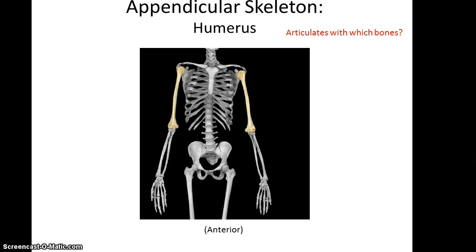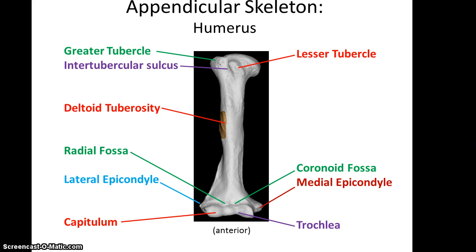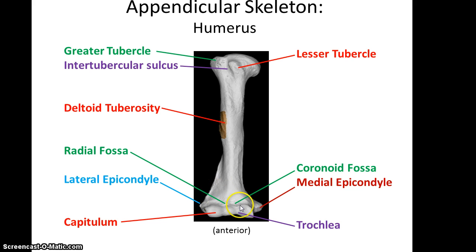Next is the humerus. Looking at the anterior view, at its proximal end you have a greater tubercle, an intertubercular sulcus or groove that wraps around the lesser tubercle. A little further down you find the deltoid tuberosity, which is a thick and rough patch on the shaft of the humerus. At the distal end you have the lateral epicondyle, slightly proximal to the capitulum, and then the medial epicondyle, slightly proximal to the trochlea. Above the capitulum and the trochlea is the radial fossa, where the radius can fit in, and the coronoid fossa.